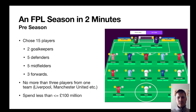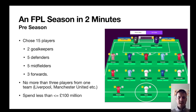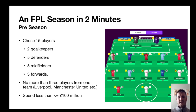So what is an FPL season? Before the game starts you need to choose 15 players: two goalkeepers, five defenders, five midfielders, and three forwards. You can have no more than three players from any one team — for example, no more than three Liverpool players — and you need to spend less than £100 million.